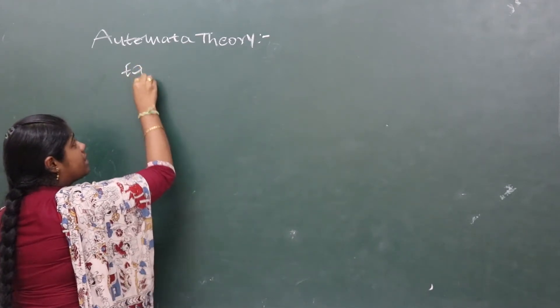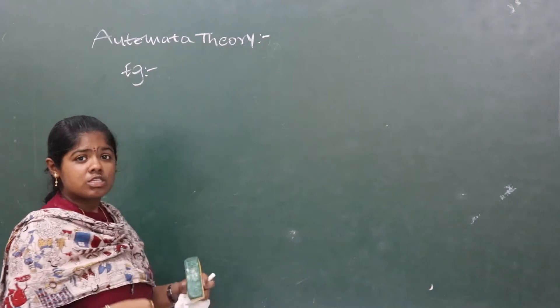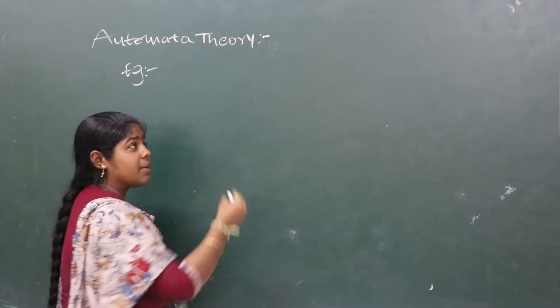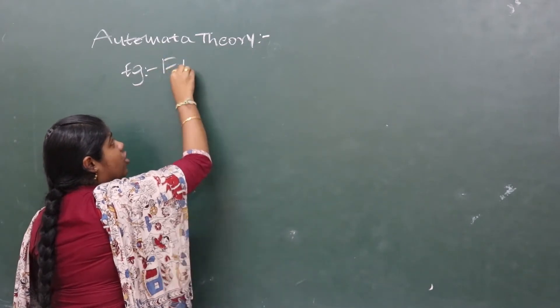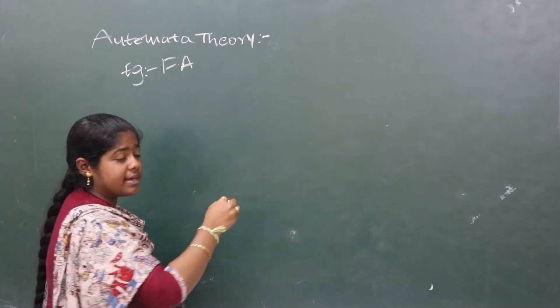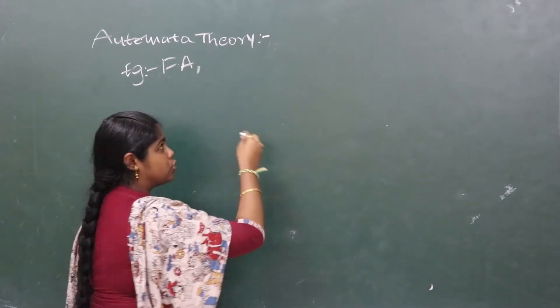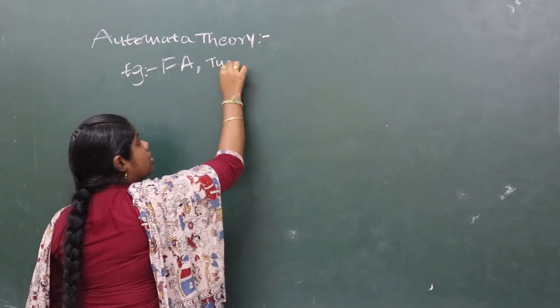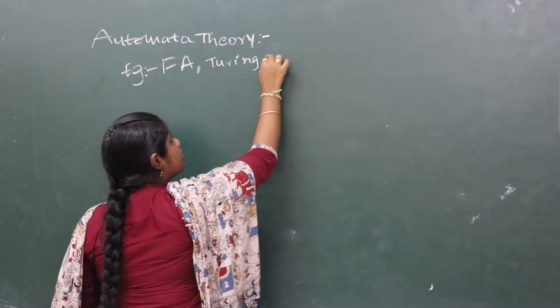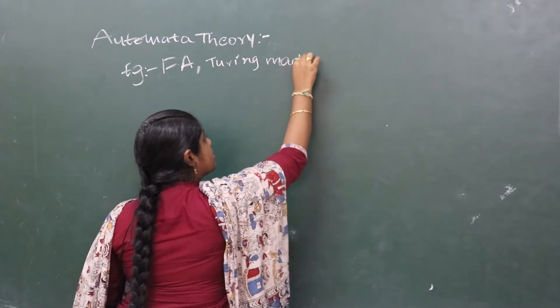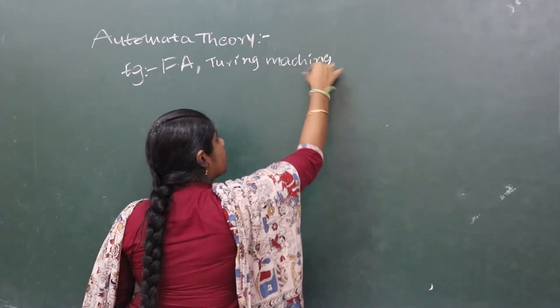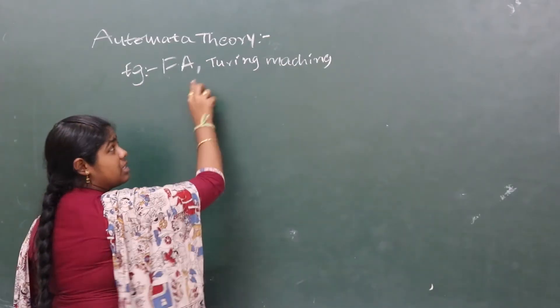Some examples of this automata theory. We can solve finite automata. First one is finite automata. Turing machines. Second example is Turing machines.